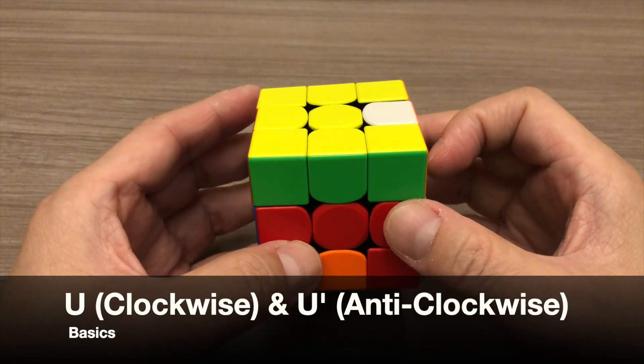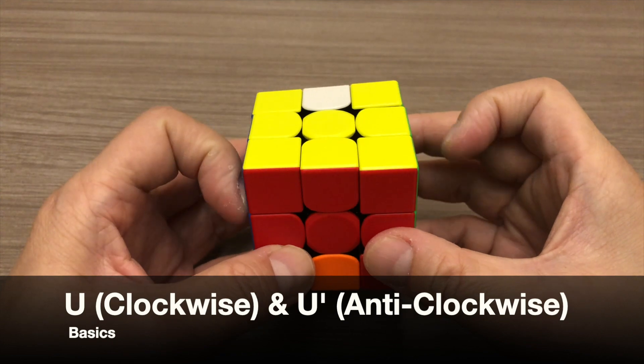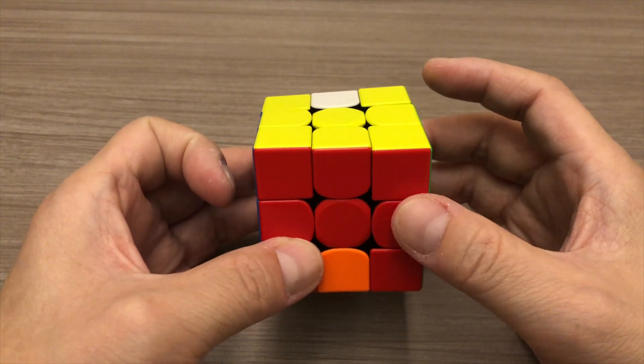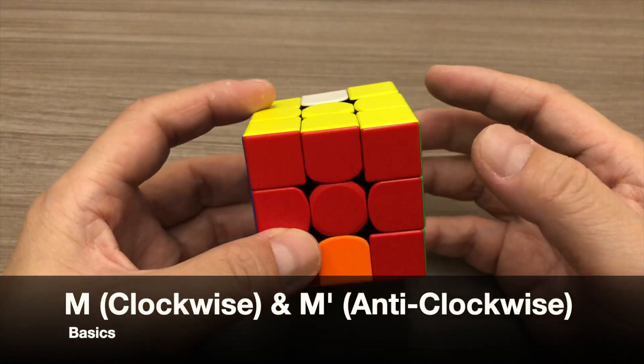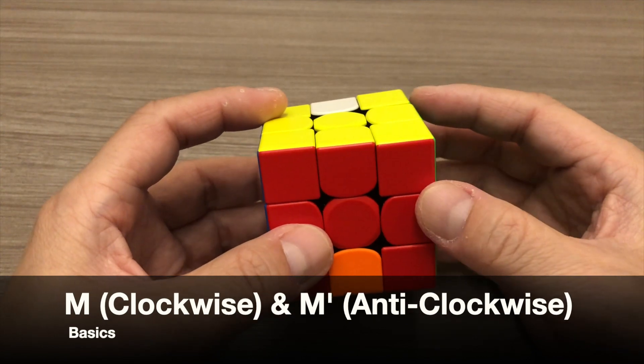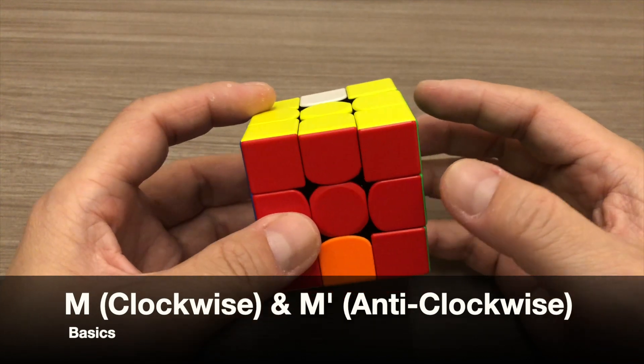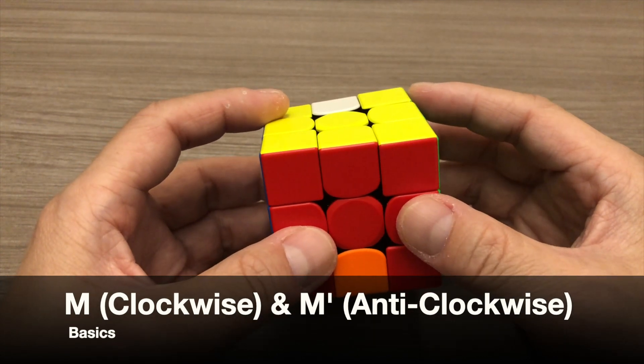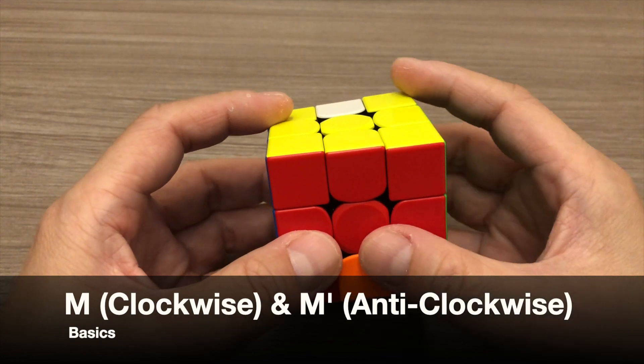The last move notation is M. We have learnt this move notation in part 4 of this tutorial series. Do note that M follows the same direction as the left face of the cube.